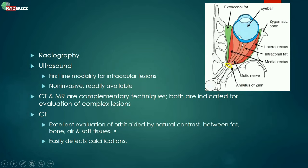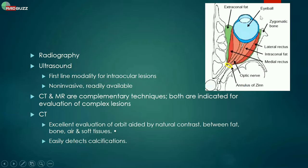Whenever you're looking at an orbital pathology, you should tell whether it is within the cone — the intraconal region — or outside the cone, which is extraconal. If something is extraconal, it will still be intraorbital because the whole structure is the orbit. Within the orbit we have extraconal, intraconal, and globular pathology. So if something is intraorbital it can be extraconal or intraconal; if extraorbital, it will be extraconal and extraorbital.